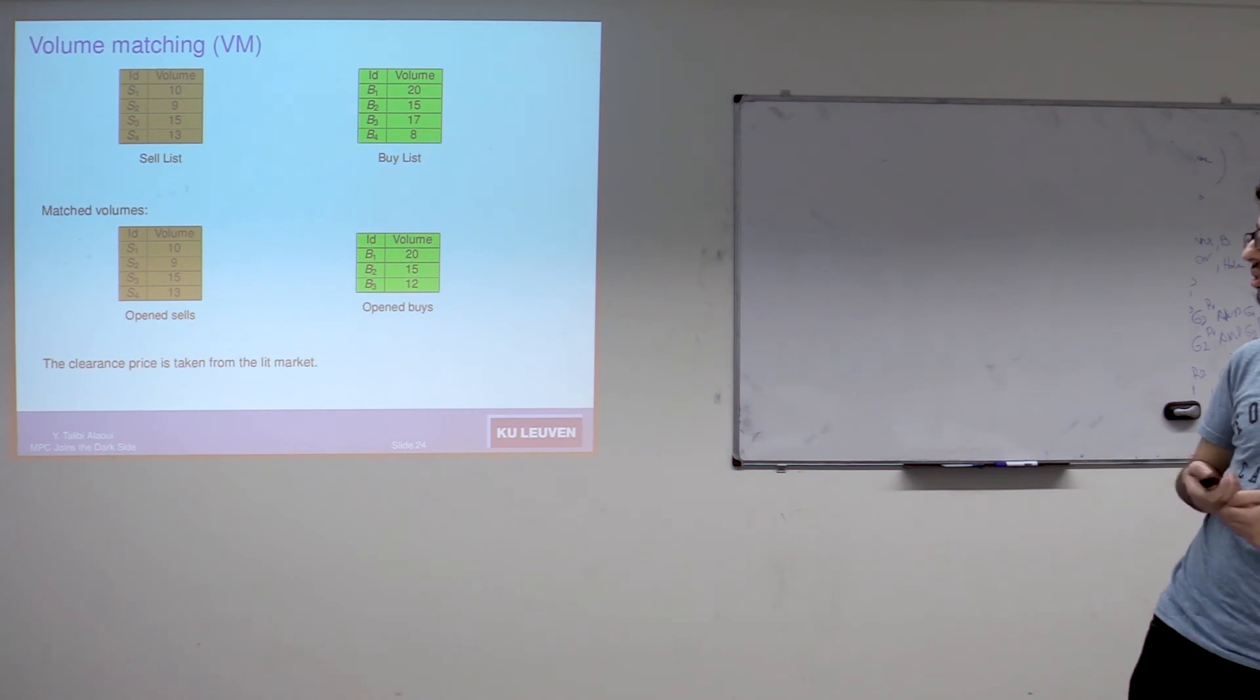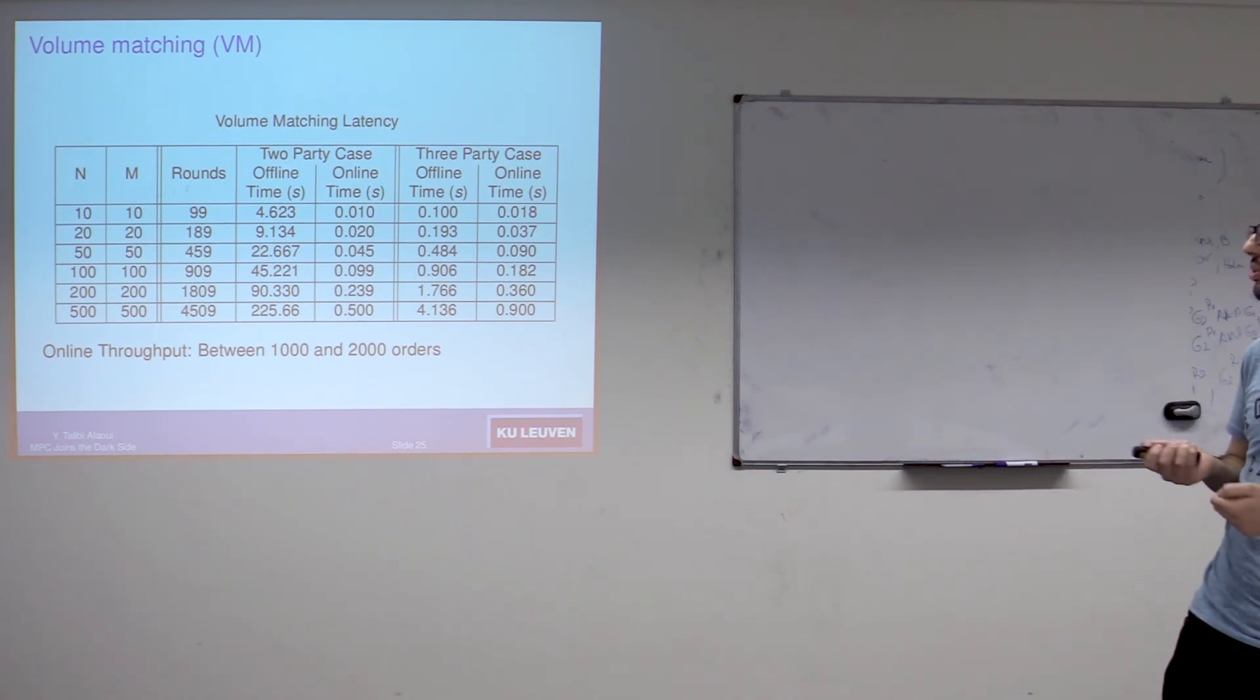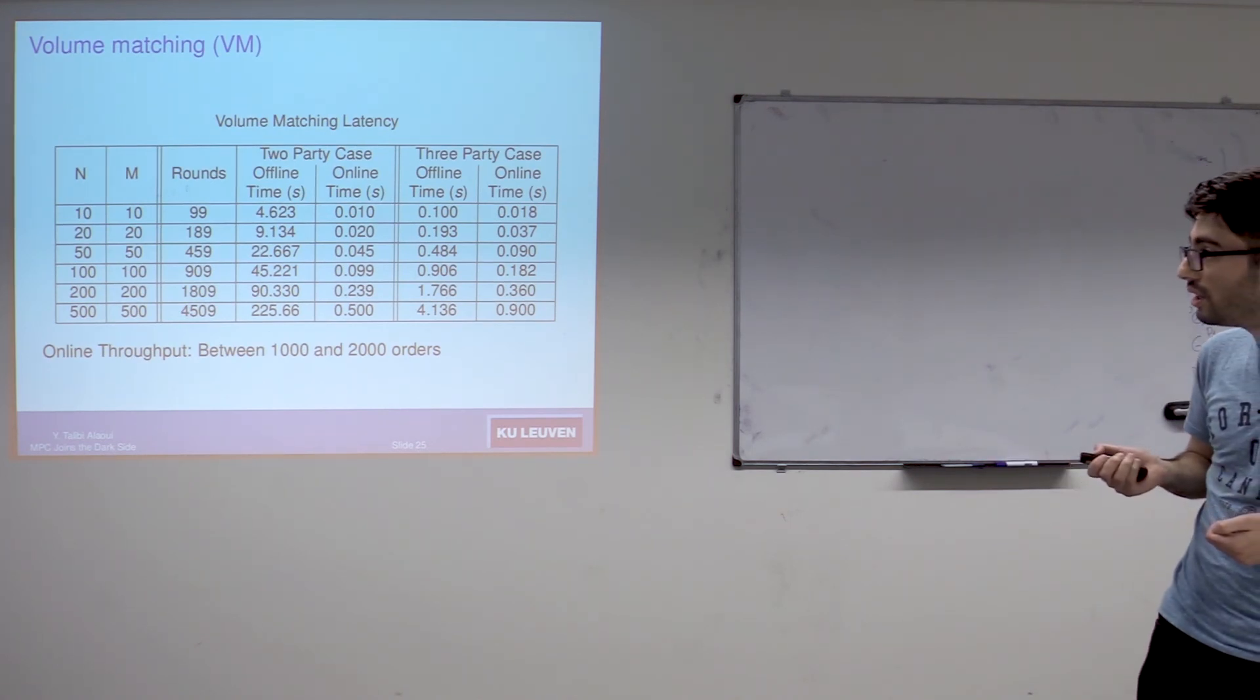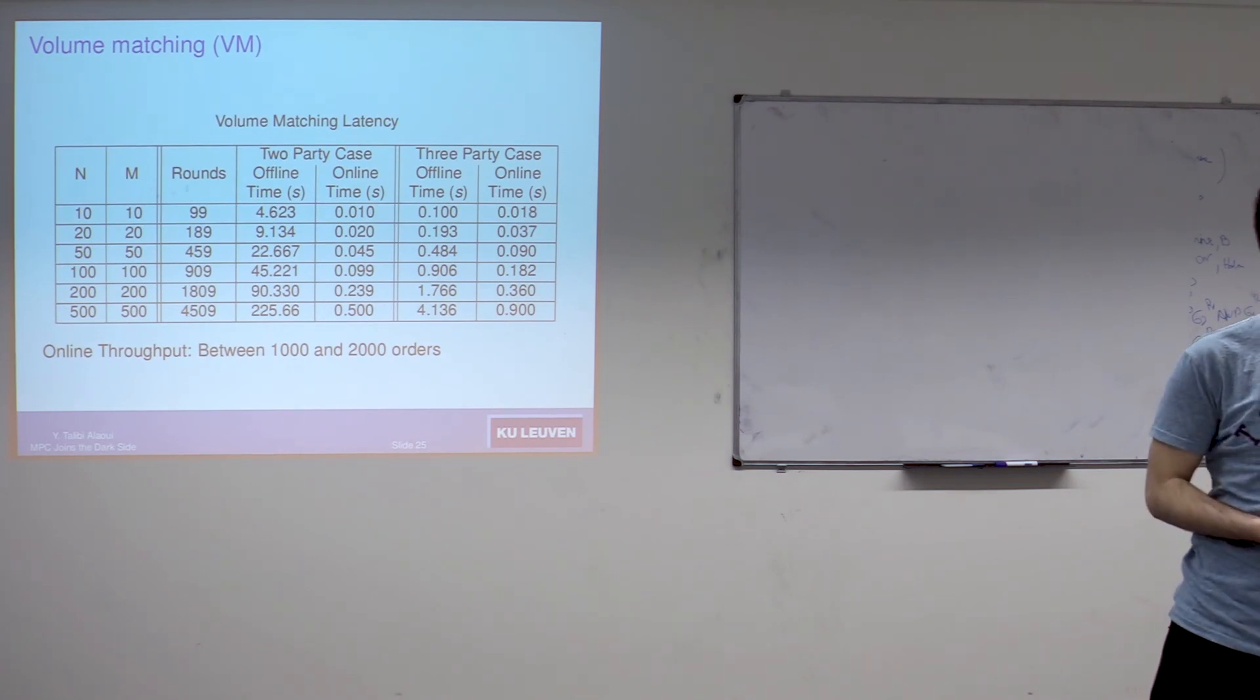Due to its simplicity, we got much better runtimes for this third algorithm. Note that here, for sell and buy lists of size 500, we didn't reach one second for the online phase for both settings. The online throughput was something between 1000 and 2000, which is close to what one would need in a real market.